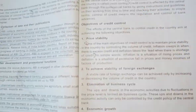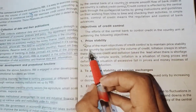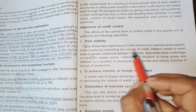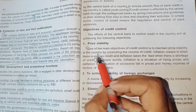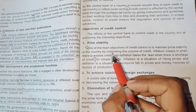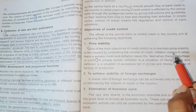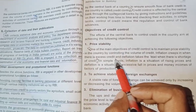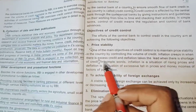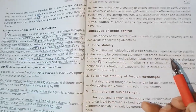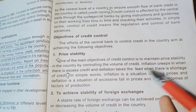First, price stability. One of the main objectives of credit control is to maintain price stability in the country by controlling the volume of credit. Inflation creeps in when there is excess credit, and deflation takes the lead when there is a shortage of credit. Therefore, we have to control the volume of credit.